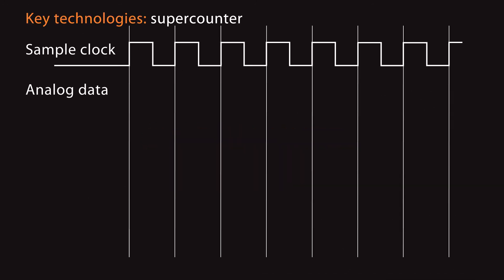How does patented super counter technology work? The analog data, like voltage or strain, is acquired by the sample clock in fixed time intervals.